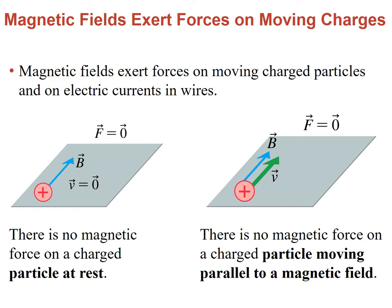Here we have a plane in which there's a magnetic field along the plane in that direction as shown by the blue arrow, and we have a charge at rest. If the velocity is zero, then the force is going to be zero — there is no magnetic force on a charged particle at rest. However, if it is moving along the same direction as the magnetic field, the force is zero. Or if it's moving anti-parallel to the field, the force is also zero.